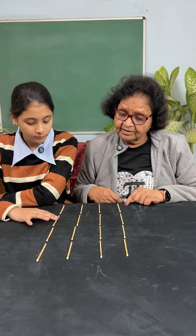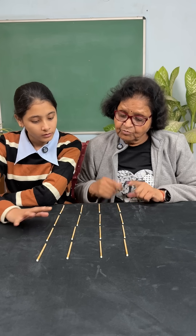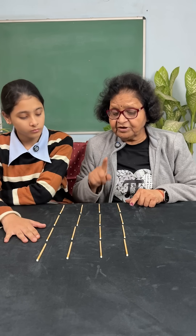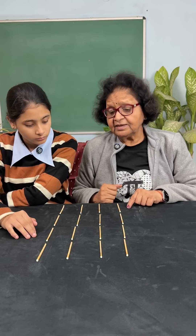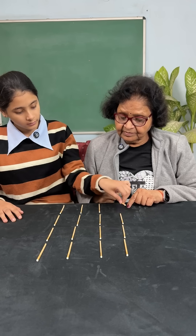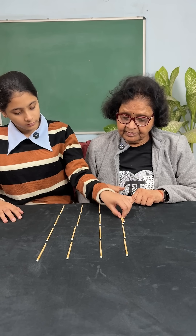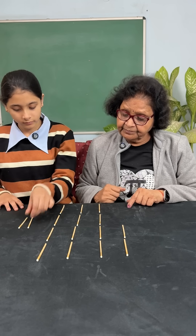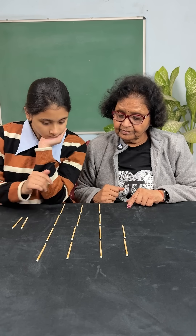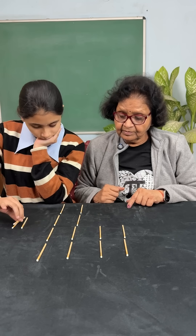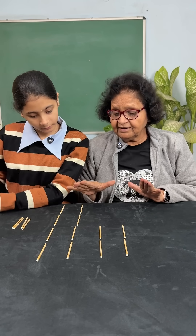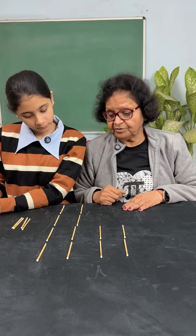We want to remove them in such a way that in every row and every column the number of matchsticks remains even. So far, 4 have been removed and there are still even counts. You have to remove 2 more.